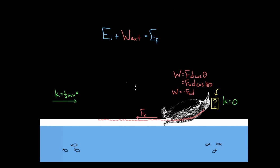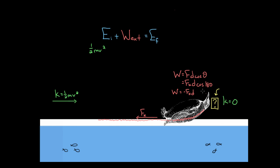In other words, we could say that Walter the penguin started with kinetic energy — so Walter starts with one half mv squared. And we don't have to worry about gravitational potential energy because Walter's not changing his height. He's just sliding straight along the ice at a horizontal level. And we can add the external work that was done — we know the external work would be the work done by friction.